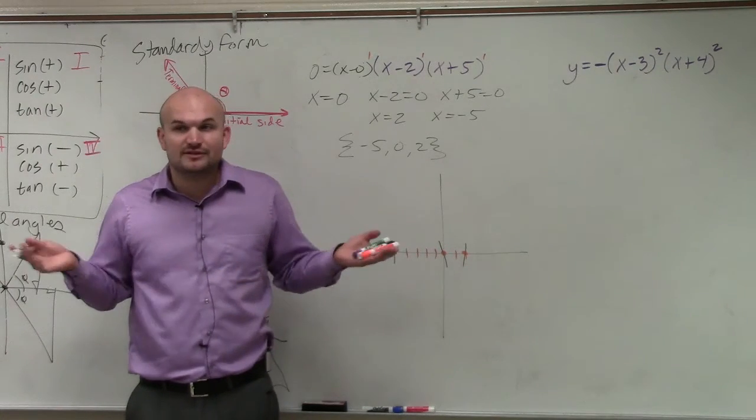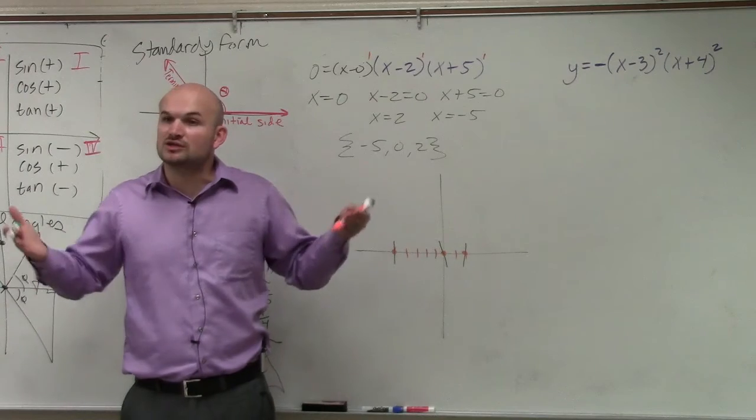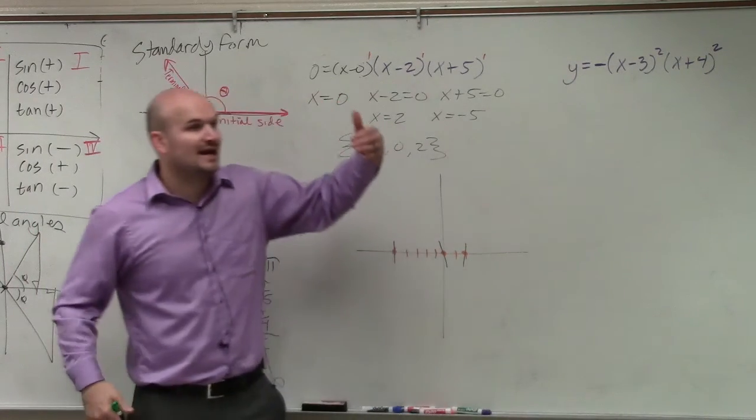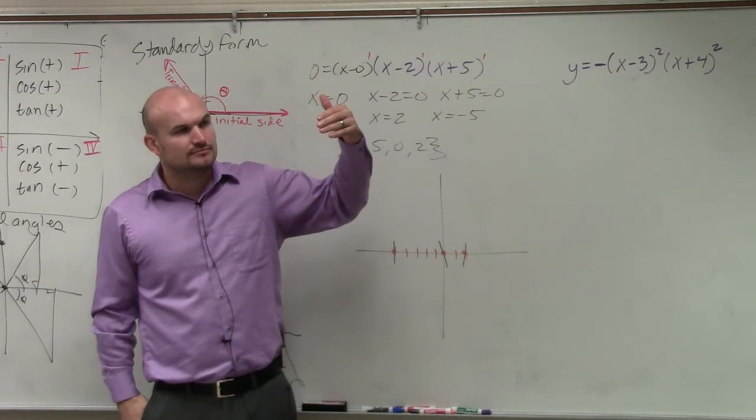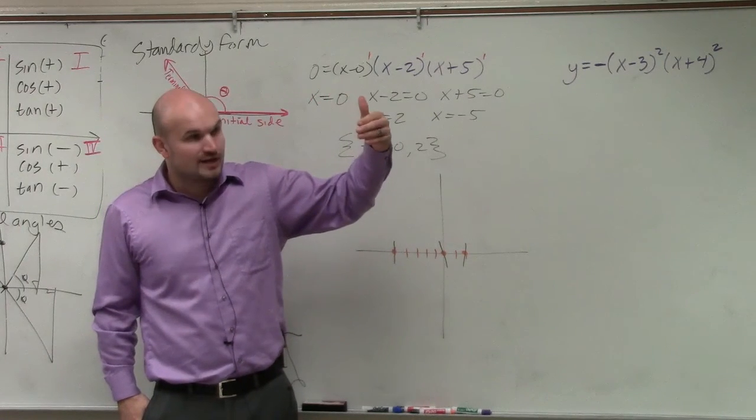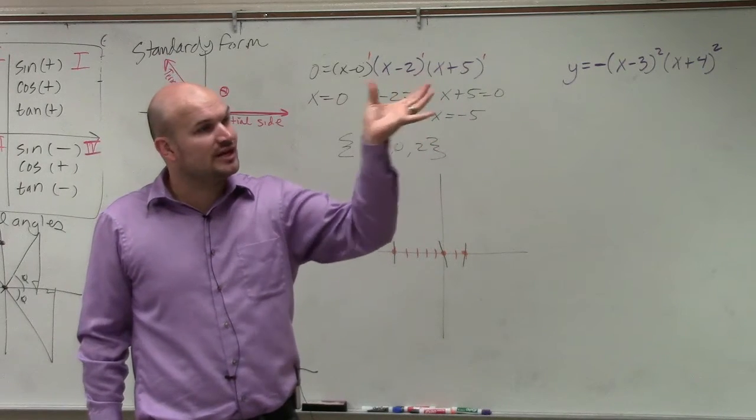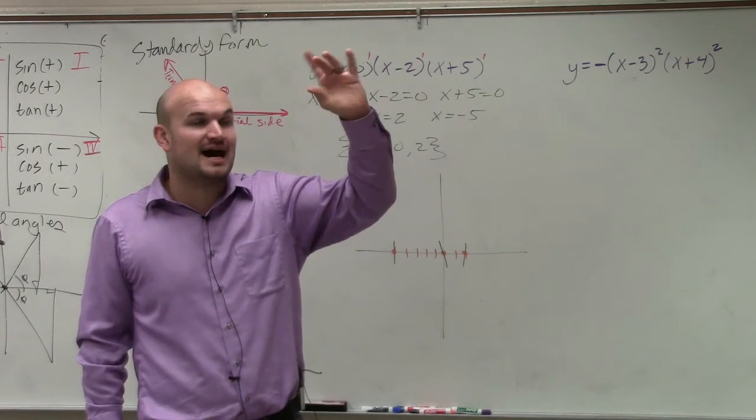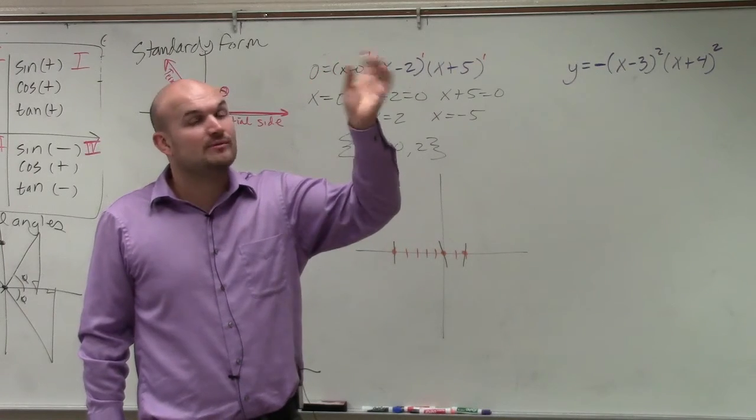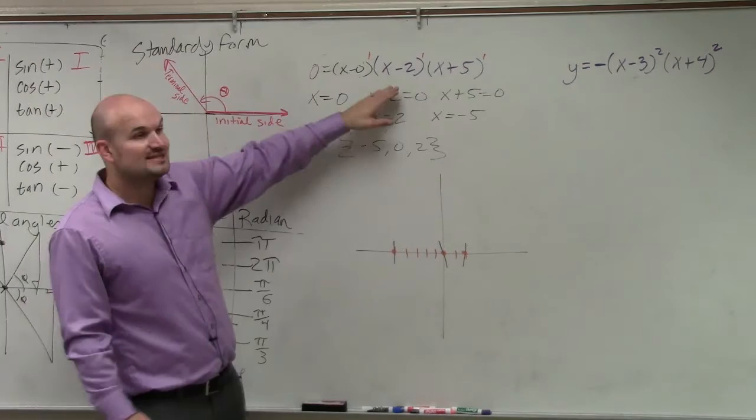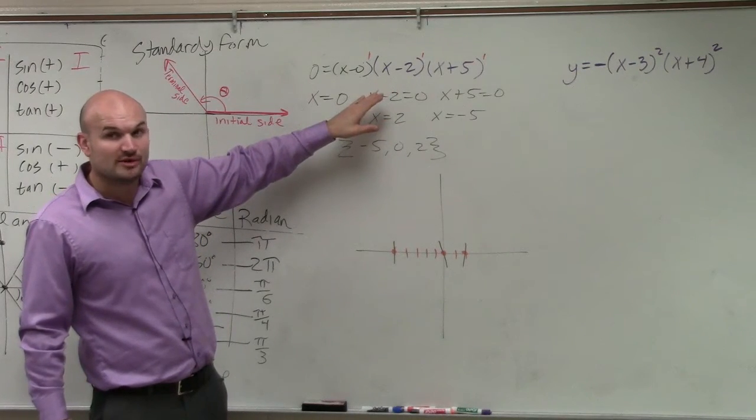Now, we still need to figure out what is the shape of the graph. So we need to understand the multiplicity. I'm sorry, the end behavior. Now, if we had a graph written in standard form, we would know that the end behavior is the term that has the highest power, which we call our degree, Kaylee. And then we look at the leading coefficient and determine if that's positive or negative.